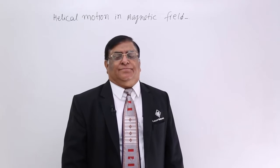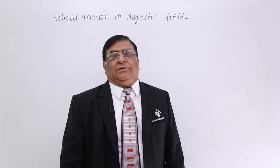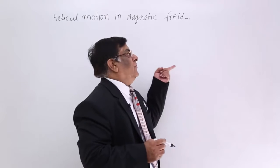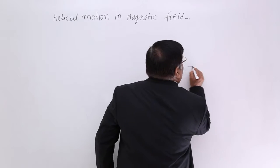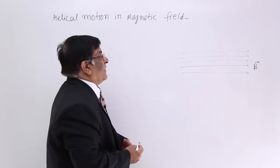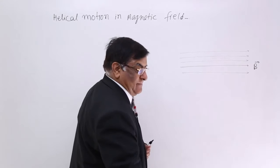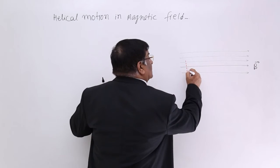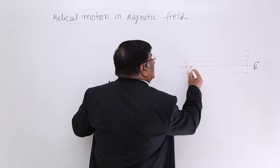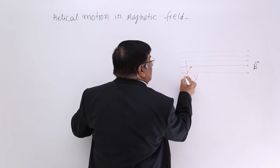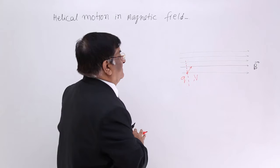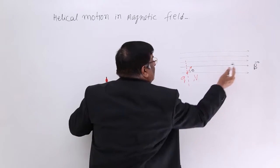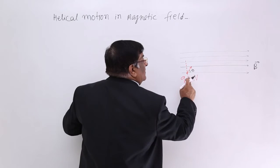When a charged particle enters a magnetic field not making a right angle to it, then what will happen? There is a magnetic field along the x-axis. This is the direction of magnetic field B. A charged particle enters making a certain angle with it, not at right angle. If this is the right angle direction, a charged particle is entering with velocity V, has charge Q, and enters in this direction making angle theta with B. There is an angle theta between V and B.